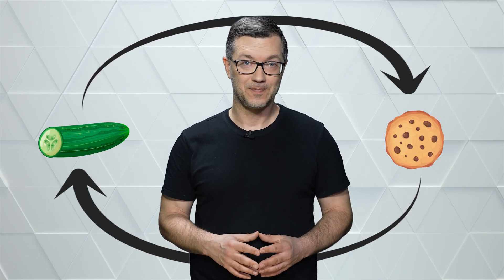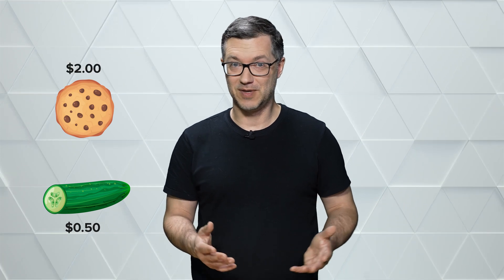Currencies exist basically to serve as a common denominator for everything that has value. If I want to trade you a cucumber for a cookie, how do we both know if it's a fair trade — that both items have relatively equal value? Well, that's super easy: we value it using currency. That cucumber might be worth half a dollar and the cookie might be worth two dollars, so that means four cucumbers are worth one cookie.